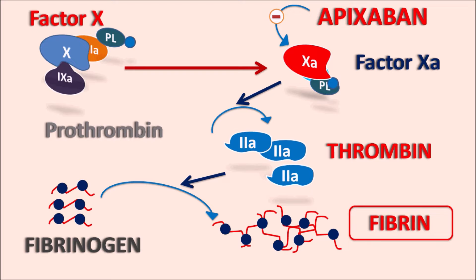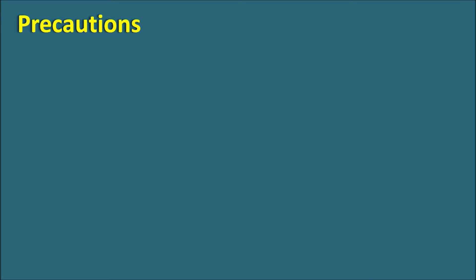In such conditions we can use blood thinners like apixaban. Apixaban inhibits Factor Xa, which is one of the important factors in the coagulation cascade. When Factor Xa is inhibited, it can prevent clot formation and prevent deep vein thrombosis and pulmonary embolism. That is why apixaban can be used both for treatment and prophylaxis in case of DVT and pulmonary embolism.